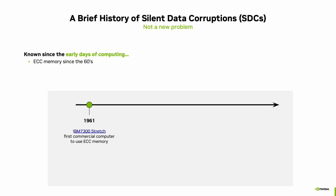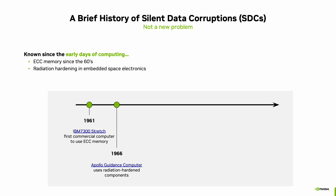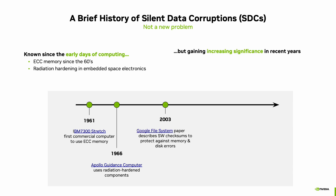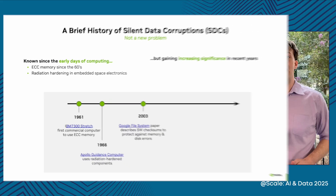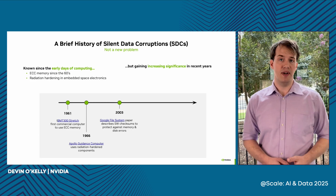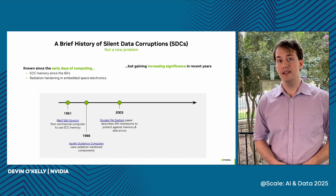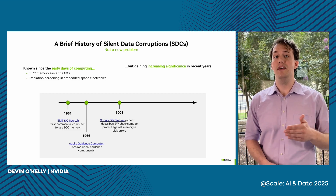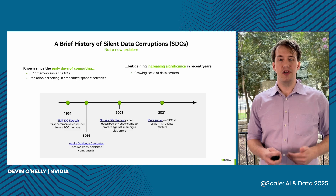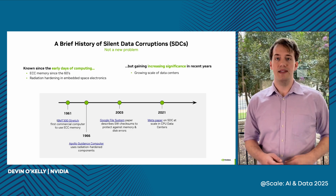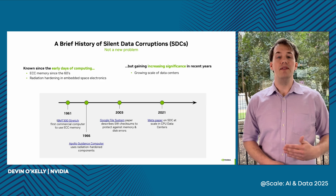SDCs are not a new problem. We've been dealing with them for decades, going back to the 60s. The first error-correcting memory was meant to address them, and the radiation-hardened components that went into the Apollo missions did the same thing. But they've become a lot more prevalent in recent years as data centers grow in size and as chips become denser. Nowadays, we have data centers with 100,000 GPUs, while Blackwell B200s have 200 billion transistors and do 20 petaflops — that's 20 million billion floating-point operations — per second.